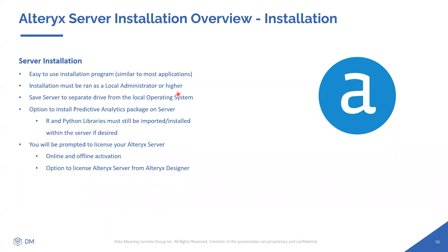You'll also see the Alteryx Server Usage Report available for download alongside the server installer. We'll cover that later — it lets you analyze everything in your gallery: workflows, studios, collections, and statistics. The server installation itself is very self-explanatory, next-next-next, taking about 30 minutes. Key requirements: run the installer as a local administrator or higher, and save the server to a separate drive from your OS to avoid latency — use an SSD, never a network drive.